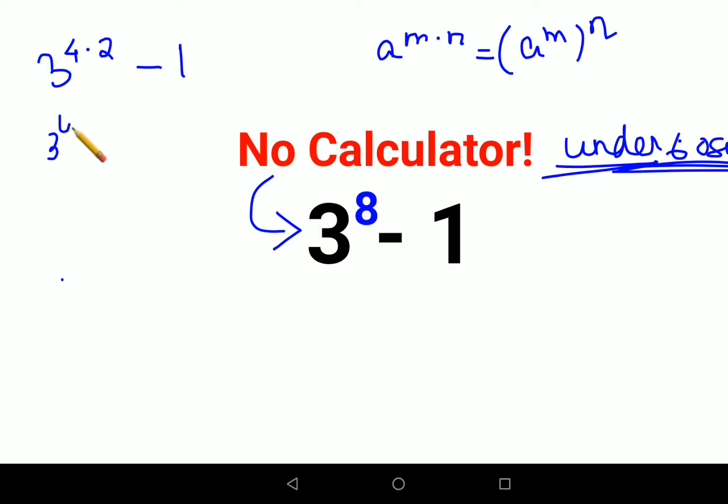So this looks like 3 raised to 4 the whole raised to 2 minus 1 can be written as what? 1 square. So now this looks like what? a square minus b square whose expansion is what? a minus b into a plus b.